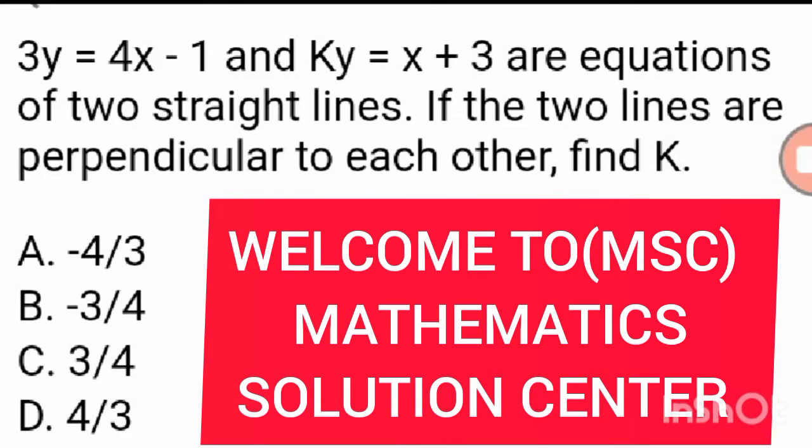We are looking at another question that says 3y is equal to 4x minus 1 and ky is equal to x plus 3 are equations of two straight lines. If the two lines are perpendicular to each other, find the value of k.